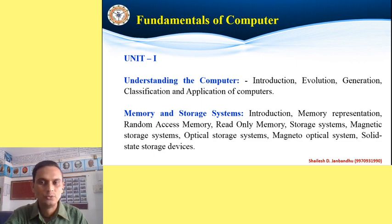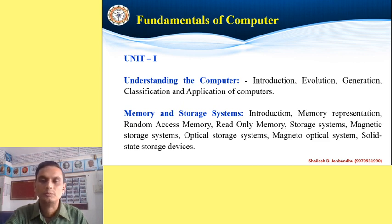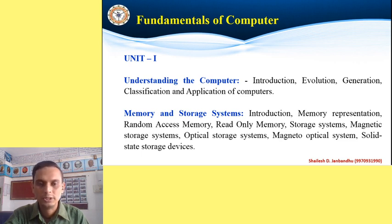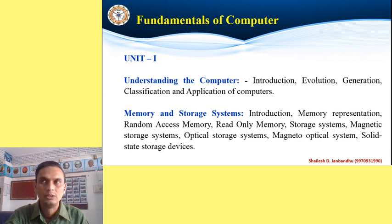The next topic in Unit 1 is memory and storage systems. Memory is most important because all data will be stored into the computer system. To store data, we need memory. Different types of memories are available — how memory can be represented, what is RAM, what is ROM, different types of storage systems such as magnetic disk, optical storage, magneto-optical storage, and solid-state storage devices.